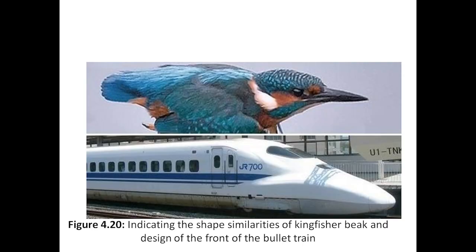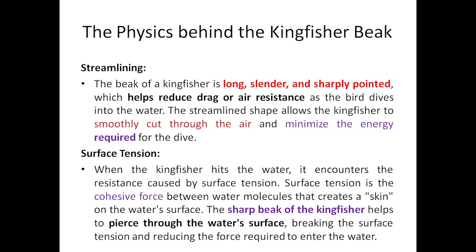This is exactly how the bird looks — the kingfisher beak — and a similar structure was copied and inspired to make the bullet train. Specifically in Japan, some bullet trains are exactly a replica of this particular bird. Now, the physics behind the kingfisher beak — there are a lot of physics concepts we can explain regarding the kingfisher beak.